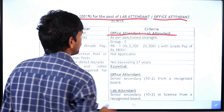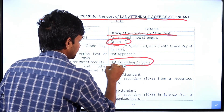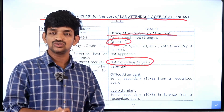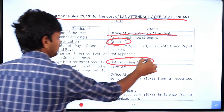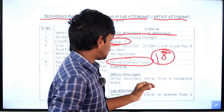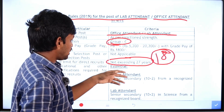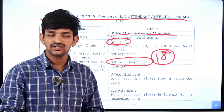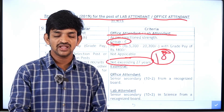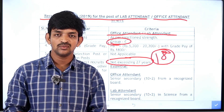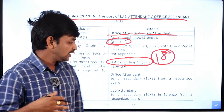Now, talking about Office Attendant or Lab Attendant post — the age shall not exceed 27 years. The minimum age is 18 years. As per Government of India norms, there is age relaxation: SC/ST category gets 5 years of relaxation, OBC category gets 3 years, and persons with disabilities get 10 years of age relaxation.